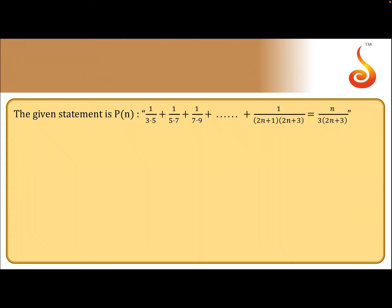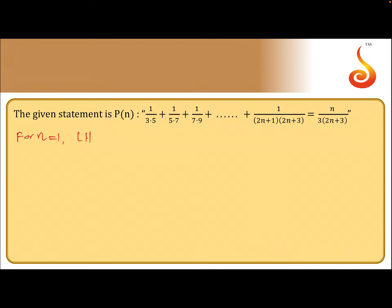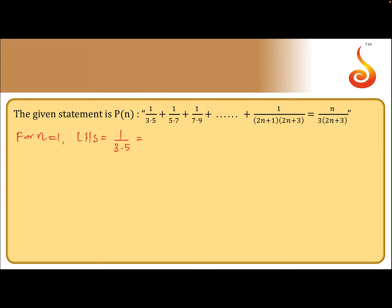First, we need to prove for n=1. For n=1, the left-hand side of the statement equals 1/(3×5), since only one term is taken, and 3×5 is 15.